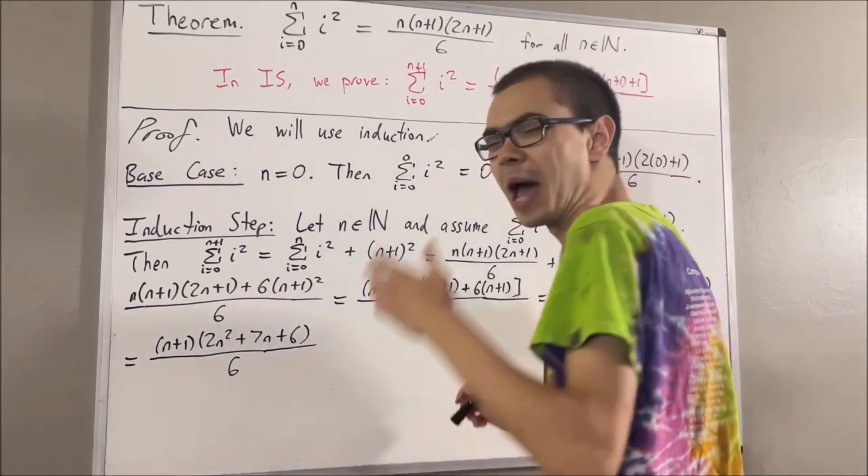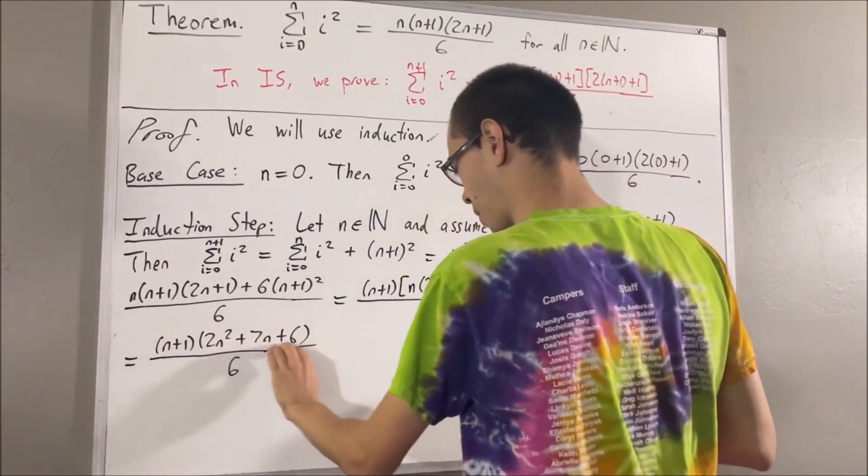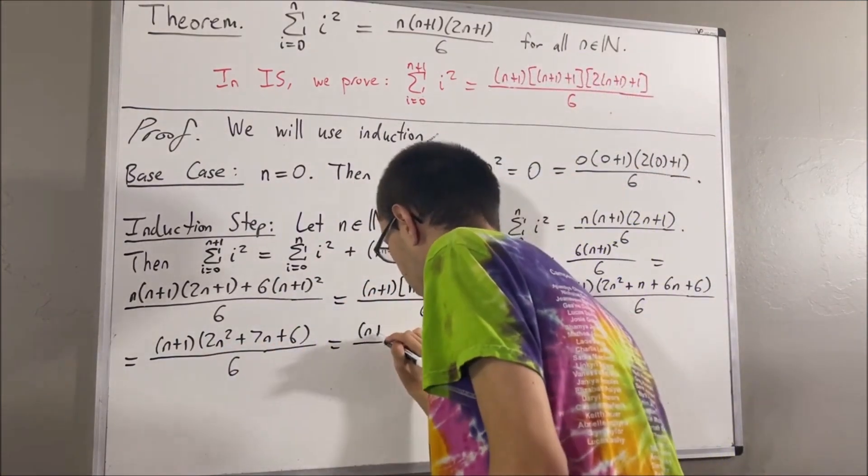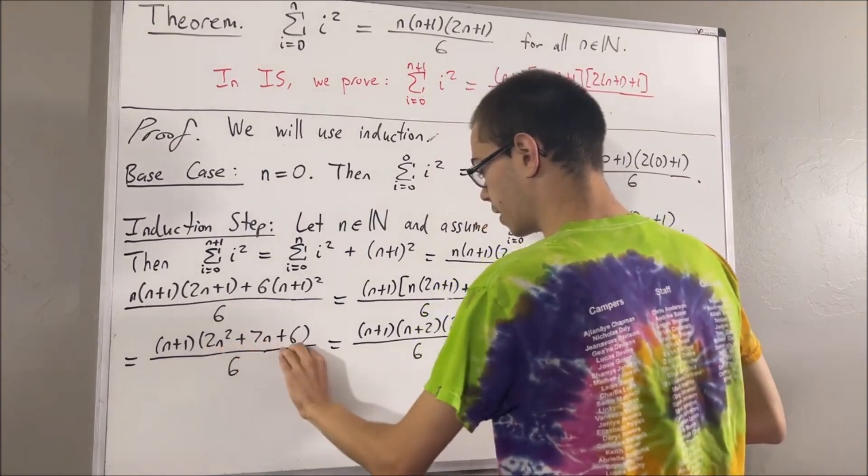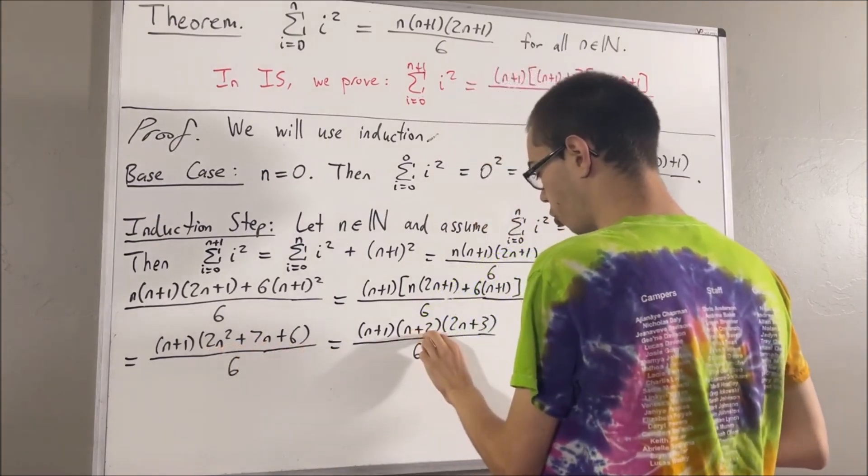And then, from algebra, we can factor this, right? That was good. Right? Really, this guy is just equal to n plus 2 times 2n plus 3.